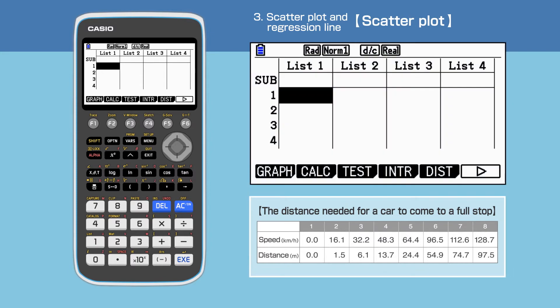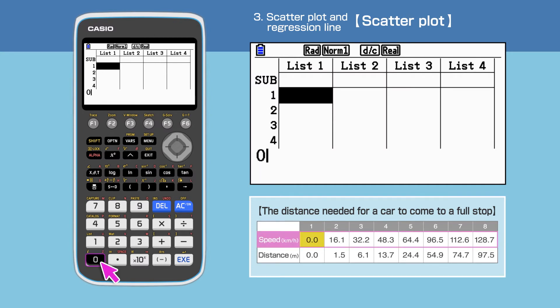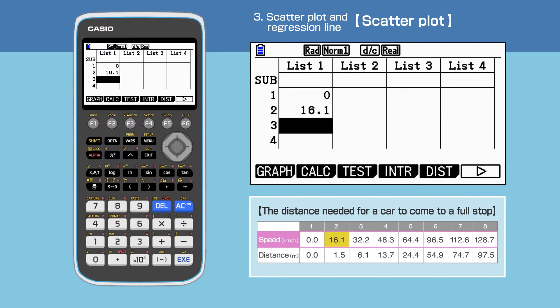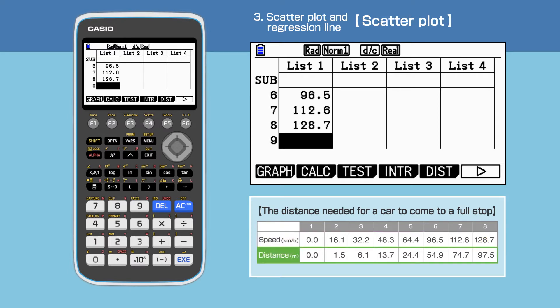Let's start entering the data. We will put the speed in list 1. The distance will go in list 2.